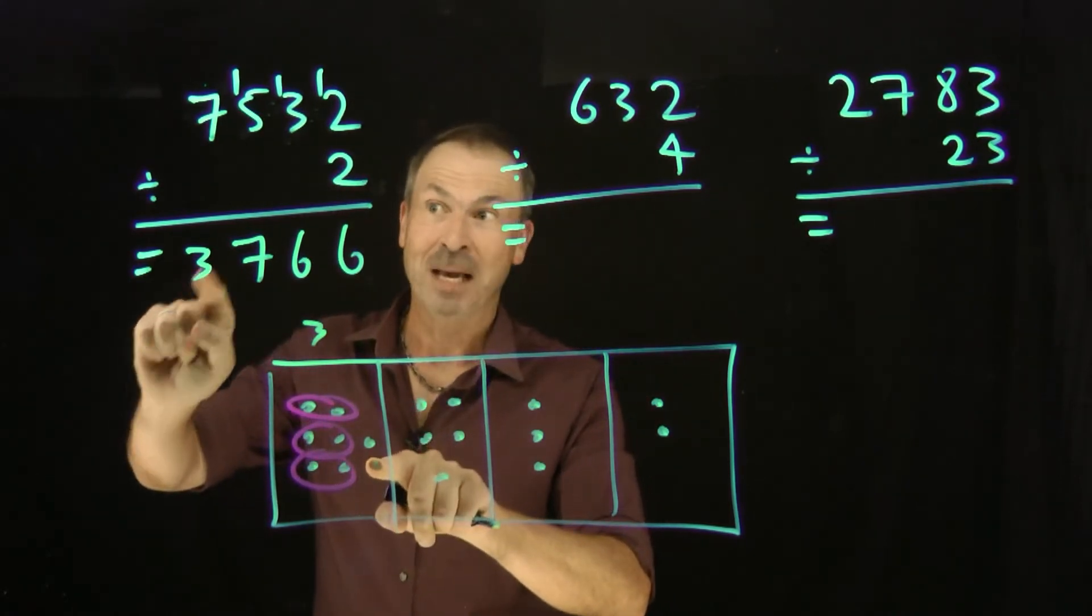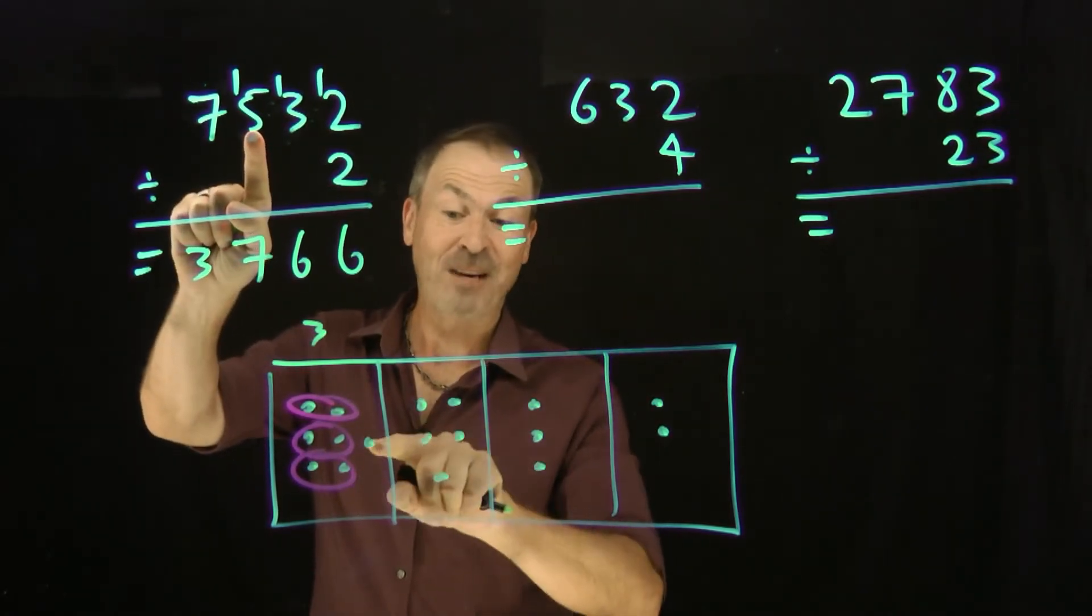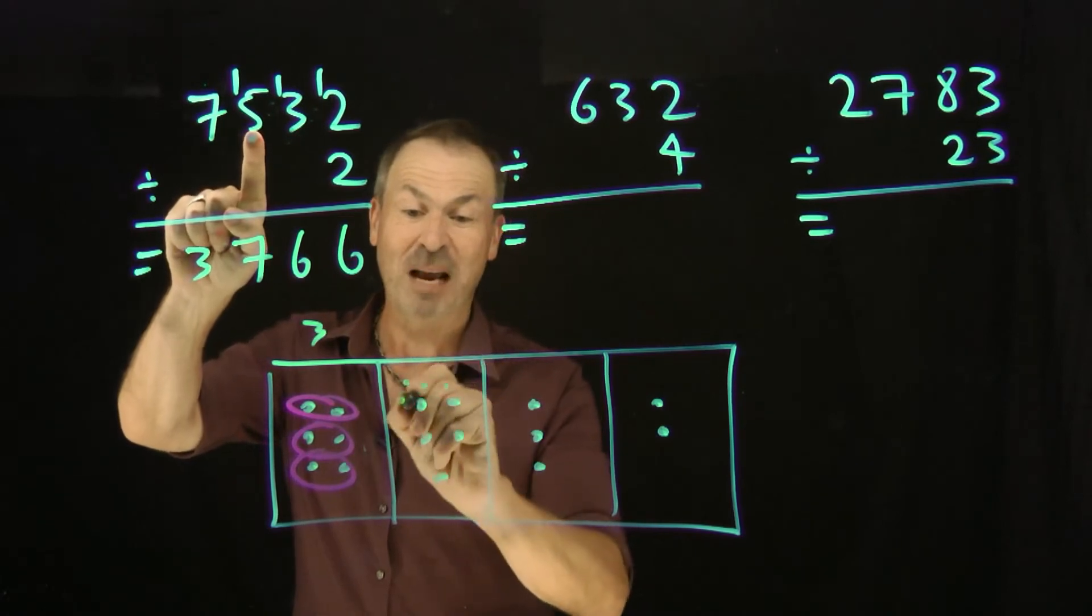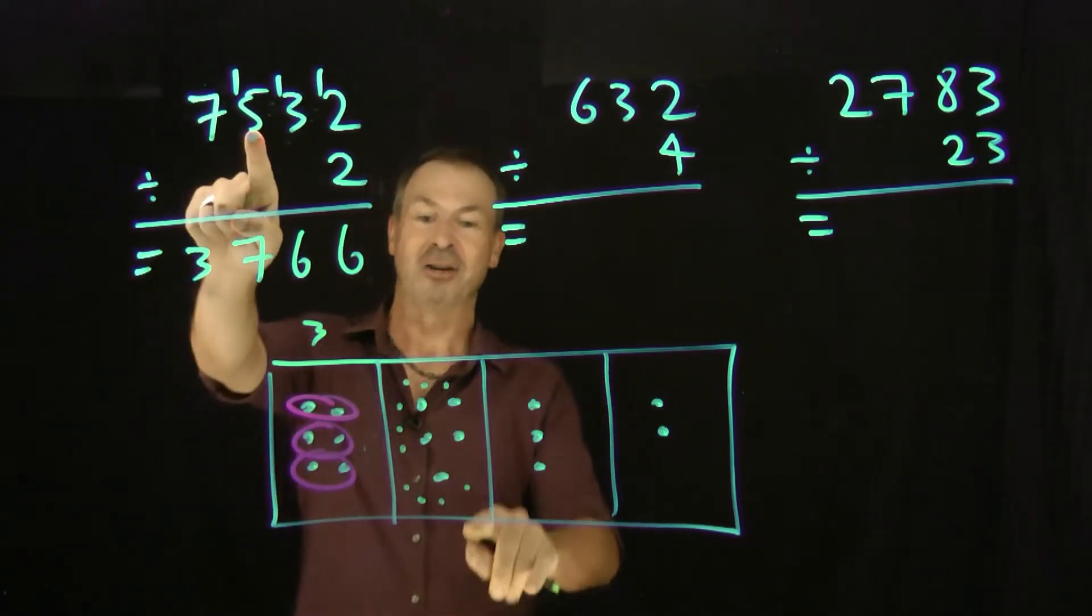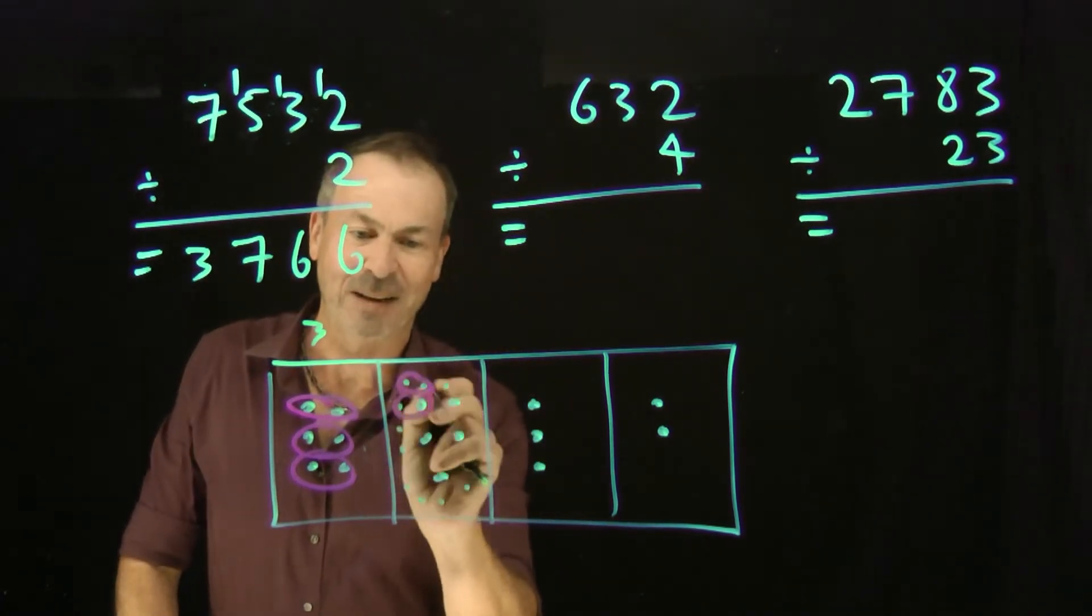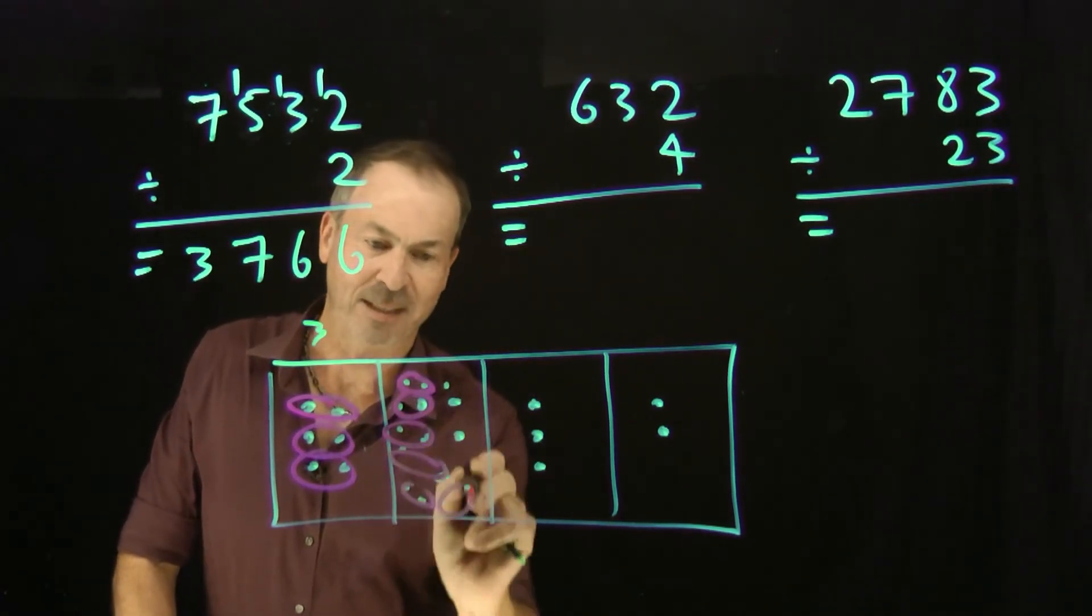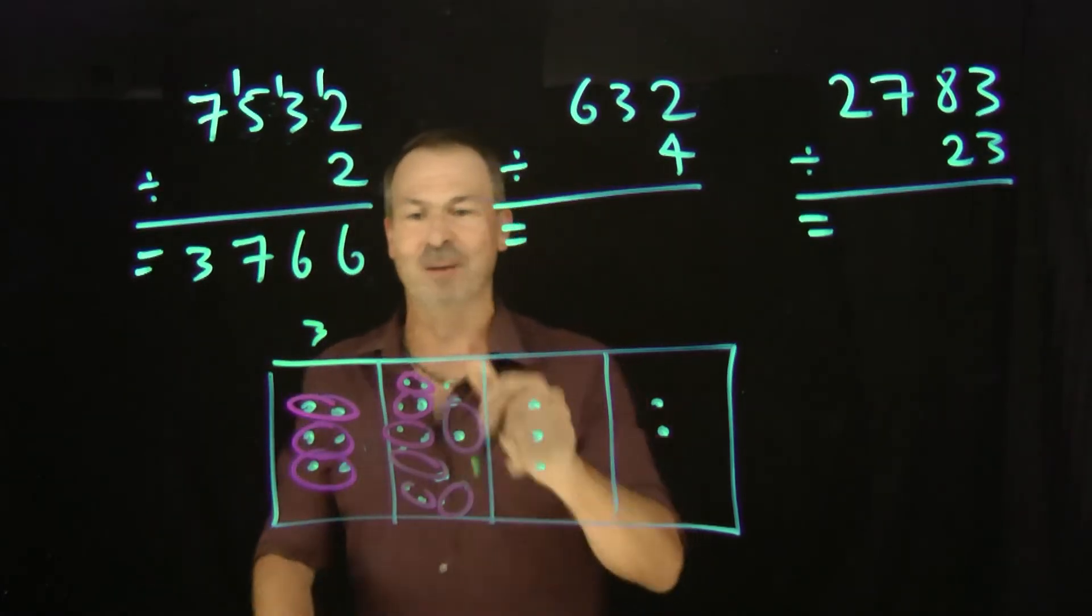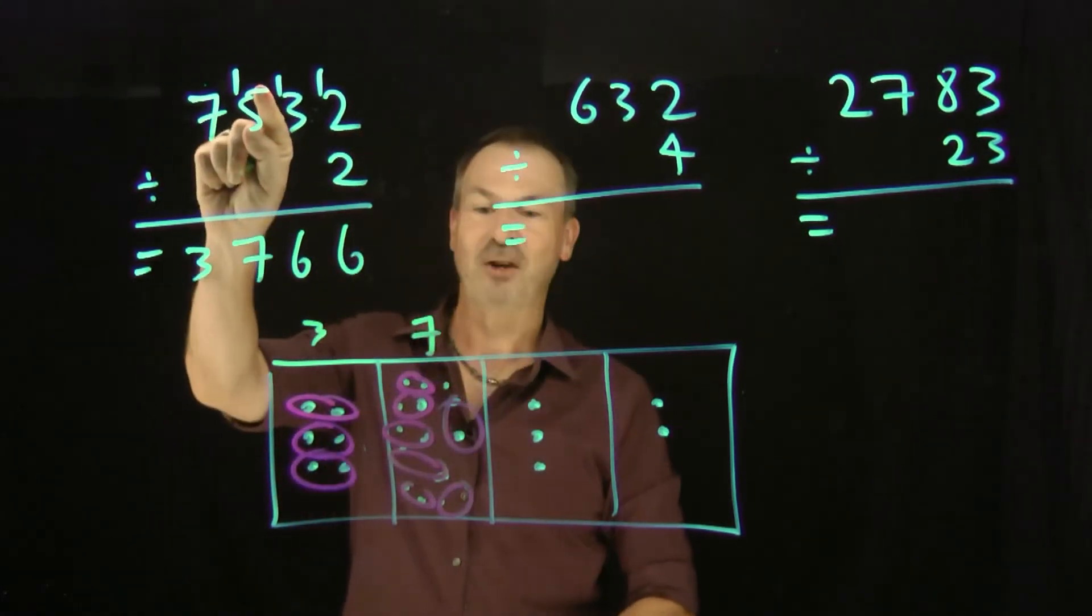What'd I do with that 1? Well, I made that 5 become 15. So I unexploded it. 1, 2, 3, 4, 5, 6, 7, 8, 9, 10. Extra 10 dots really did make it 15. How many groups of 2 do I see amongst 15 dots? Well, I see 7 of them. 1, 2, 3, 4, 5, 6, 7 with 1 left over. 7 of them with 1 left over.